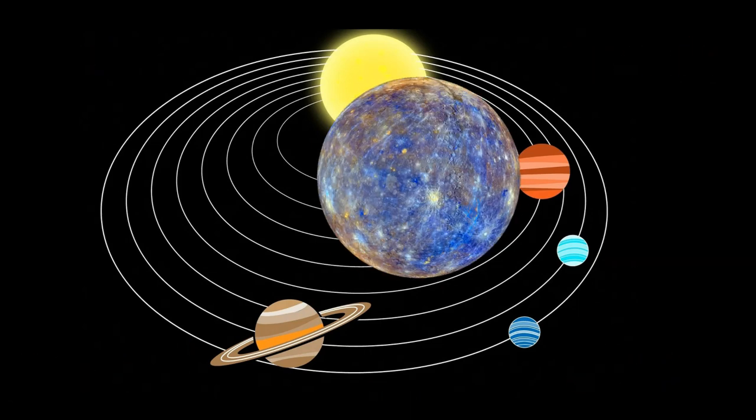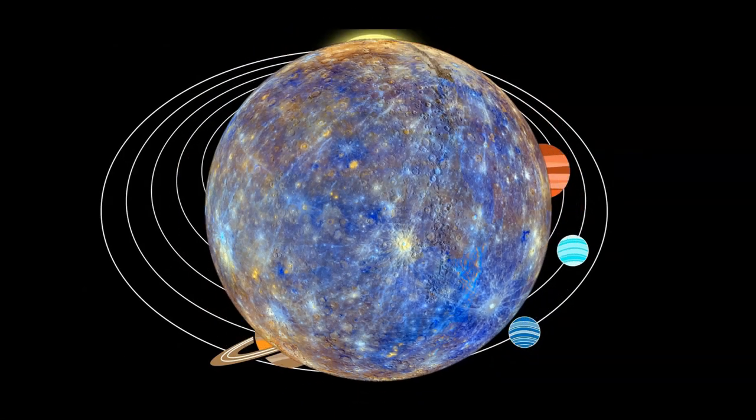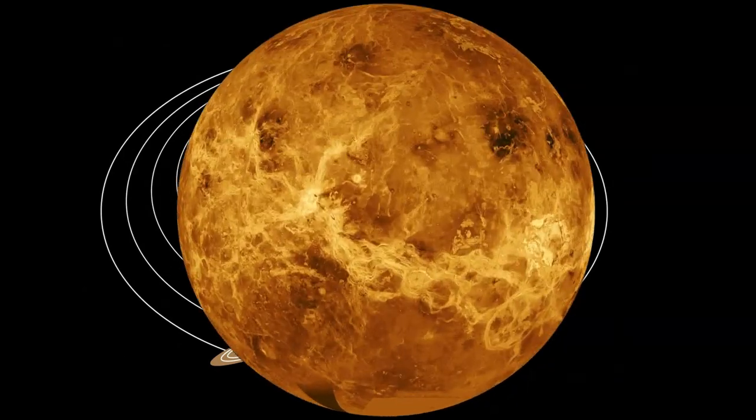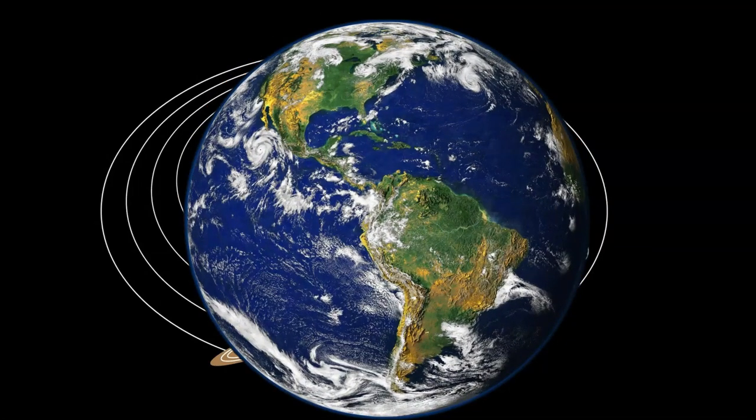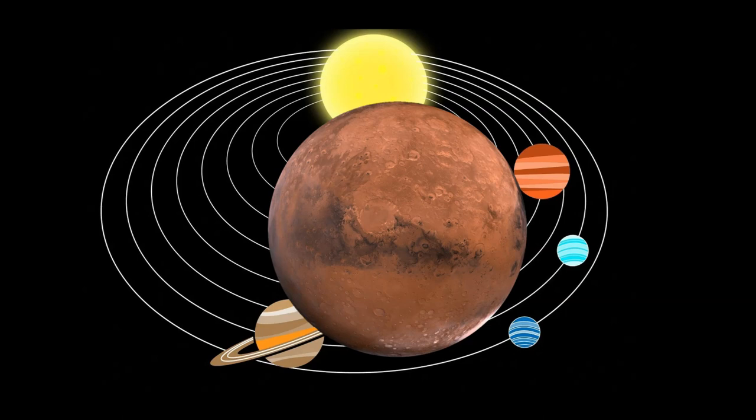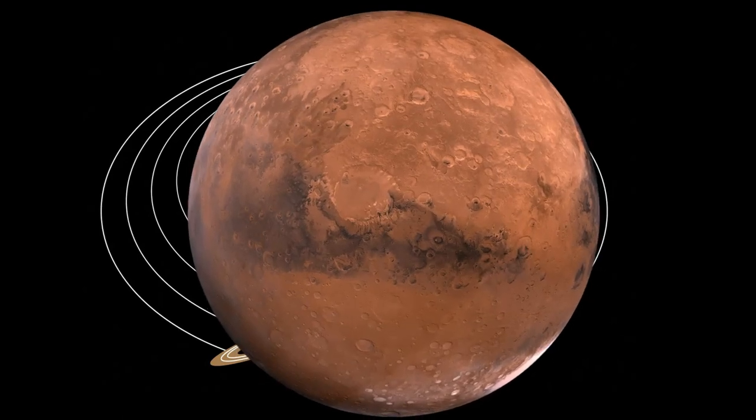Mercury is the closest planet to the Sun. Second one is Venus, it's the hottest one. Third one is Earth, this is where we live. Four is Mars with the largest volcano.